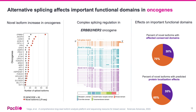Altogether, looking at all the novel isoforms discovered, the authors predicted, based on the resulting transcripts, that the percent of novel isoforms affecting conserved protein domains or protein localization is more than 30 to 35%.